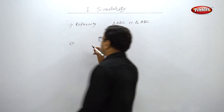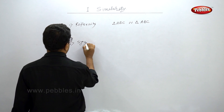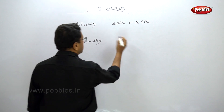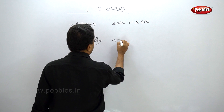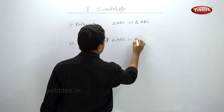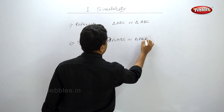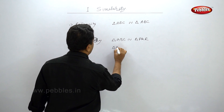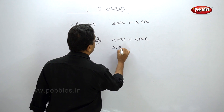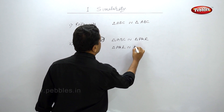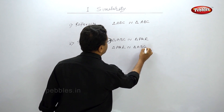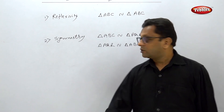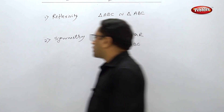The second property is symmetry. That means if triangle ABC is similar to triangle PQR, then by symmetry, triangle PQR is also similar to triangle ABC. This is called symmetry.